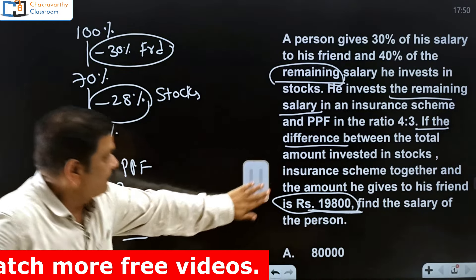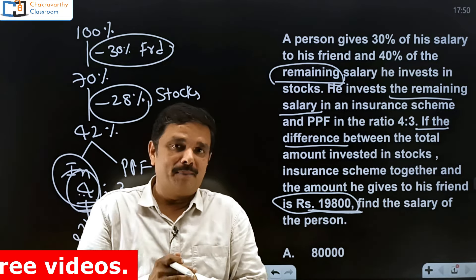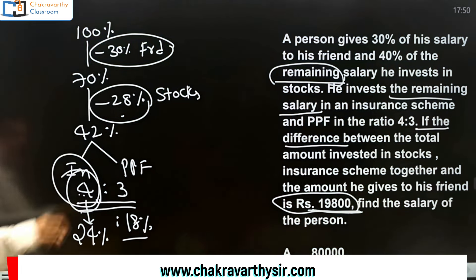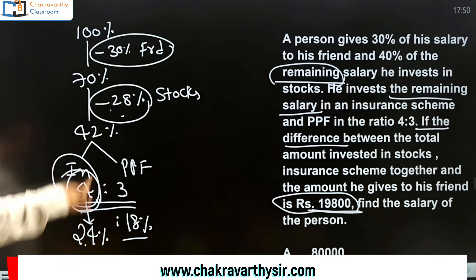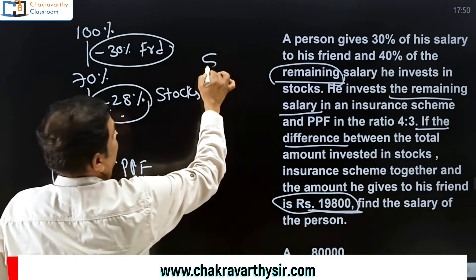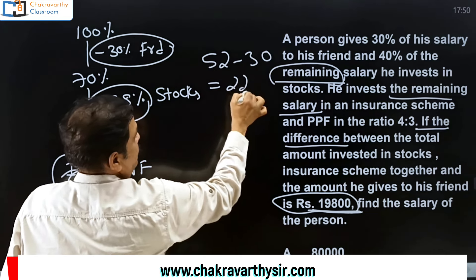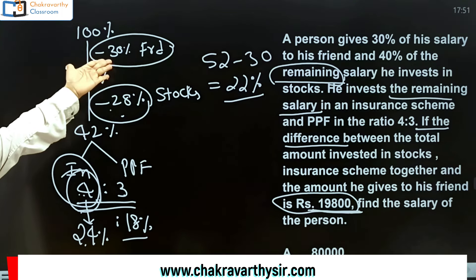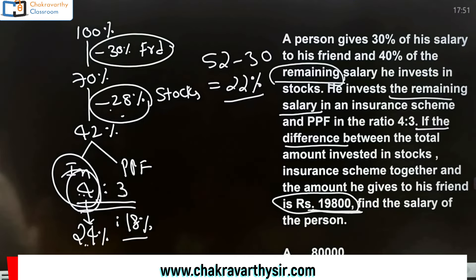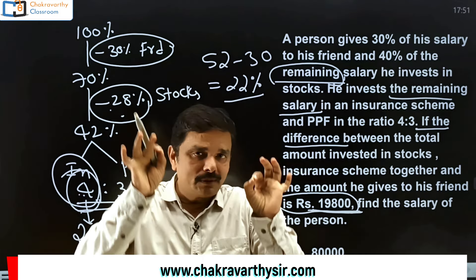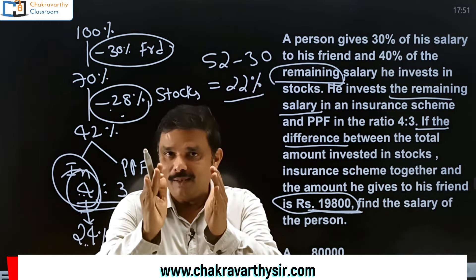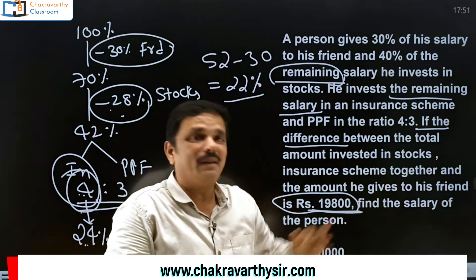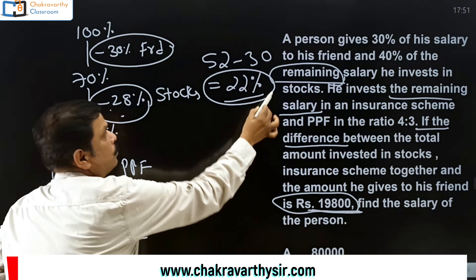Going with the conditions using my imaginary number, the resultant figure is the difference between stocks plus insurance together and the friend's amount. That is 28 plus 24 equals 52, minus 30. So that is 22%. Alternatively: 30 is 2% more than 28, so that two must be deducted from 24, giving 22%. This is the beauty of the unitary method — I started with 100%, went with the conditions, and got 22%.